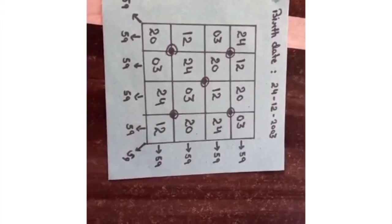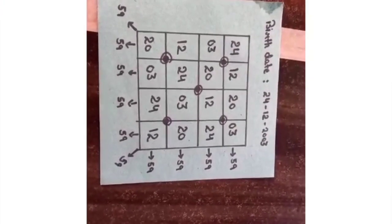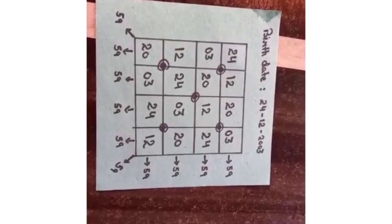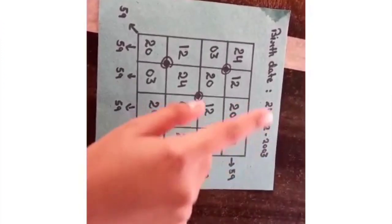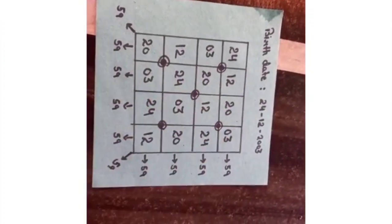Don't you all know about the magic square? Come on, I'll tell you. Now, this is what we call a magic square. If you can see, I have written my own birth date, that is 24th December 2003.